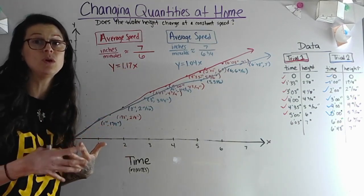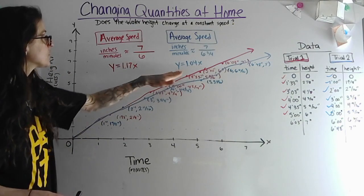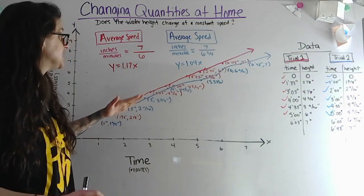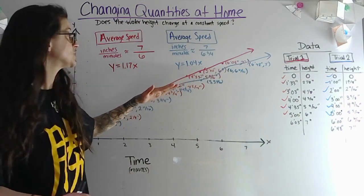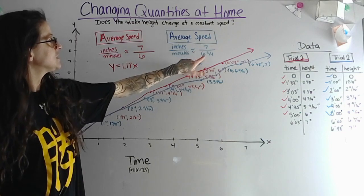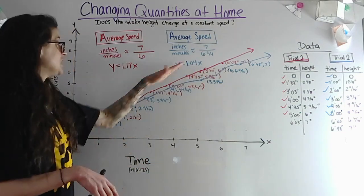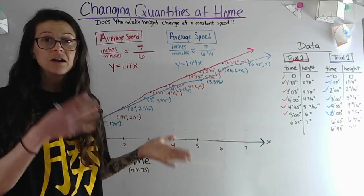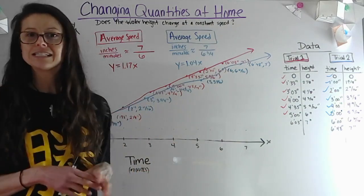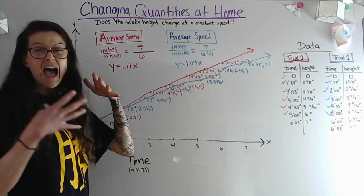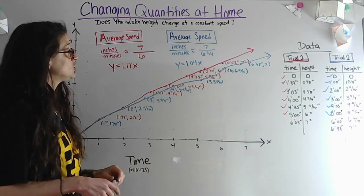So this is saying that each minute the water level rises about 1.2 inches. Now when I don't have dishes in my sink or a few dishes in my sink, it's increasing the height at a slower speed. So 7 divided by 6.75 is about 1.04. We could even be numerically more lazy, as Neil deGrasse Tyson says, and say that about every minute the water level rises about an inch.